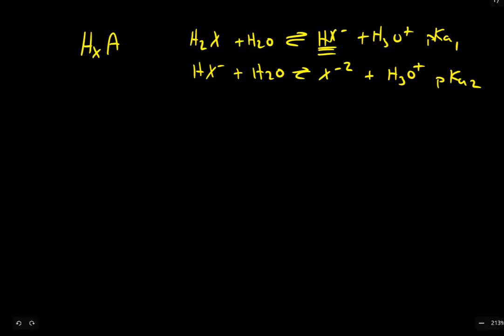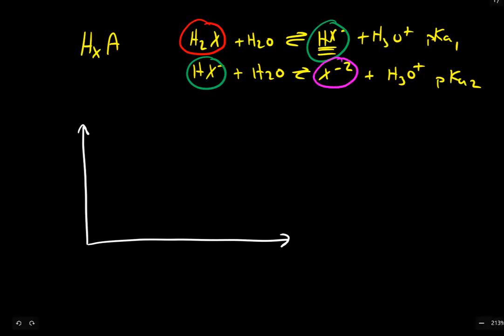So the speciation curve we're going to see is essentially an identical setup to what we saw in the past. Except now, we're going to have to deal with all three chemical species: H2X, which I'm going to show in red, HX, which will be in green, and I'll go ahead and make the fully deprotonated form in purple.